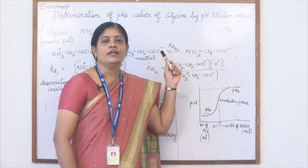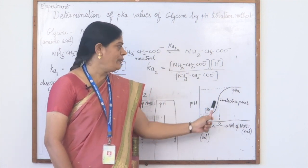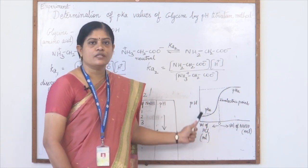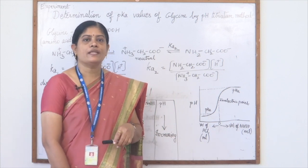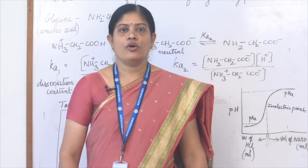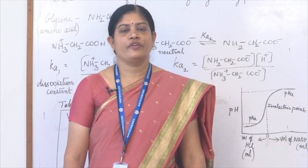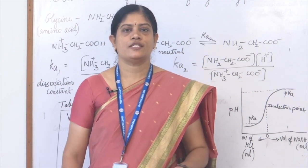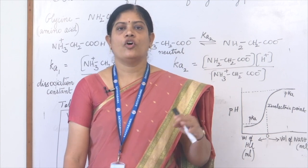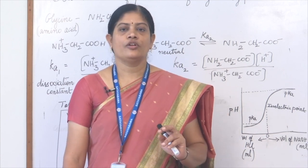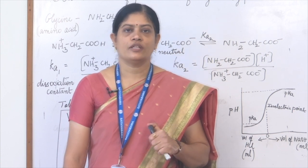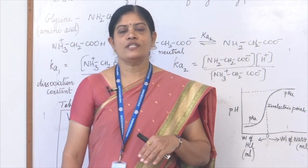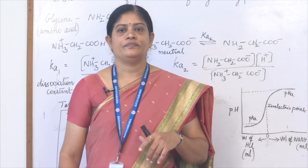From the graph and the experiment, we obtain two pKa values for glycine, confirming two dissociation constants for this simplest amino acid. I hope you are now clear about the three different forms of glycine existing in equilibrium and how the equilibrium shifts towards the glycinate anion or glycineum cation depending upon the pH of the solution. The two pKa values for glycine are approximately 2.8 and 9.6. Thank you.